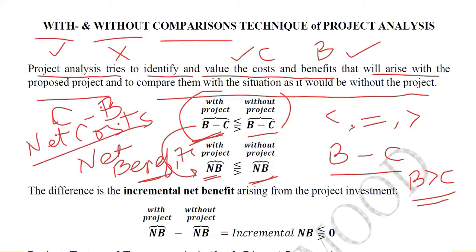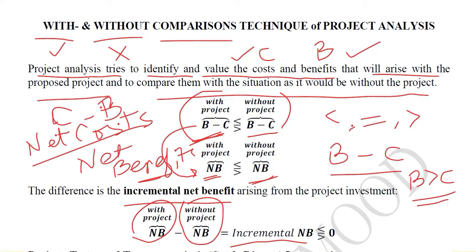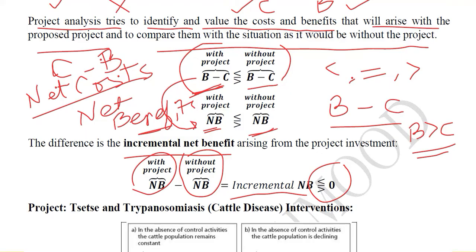There is another detail: when we take the difference of the two net benefits — that is, net benefits with project minus net benefits without project — it is called incremental net benefits, because it shows the additional net benefits when comparing the with-project possibility against the without-project possibility. The answer can be greater than zero, equal to zero, or less than zero.